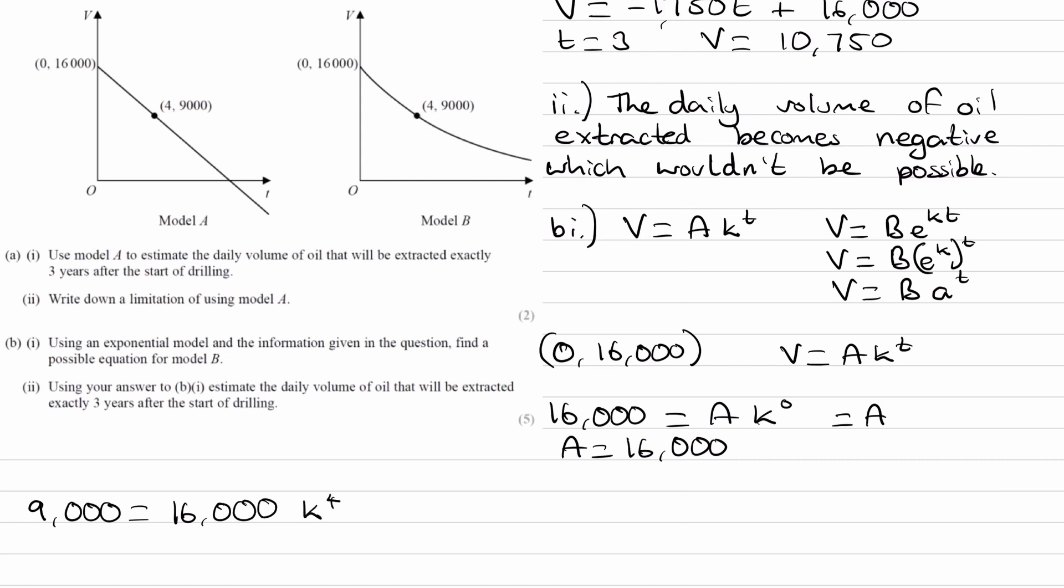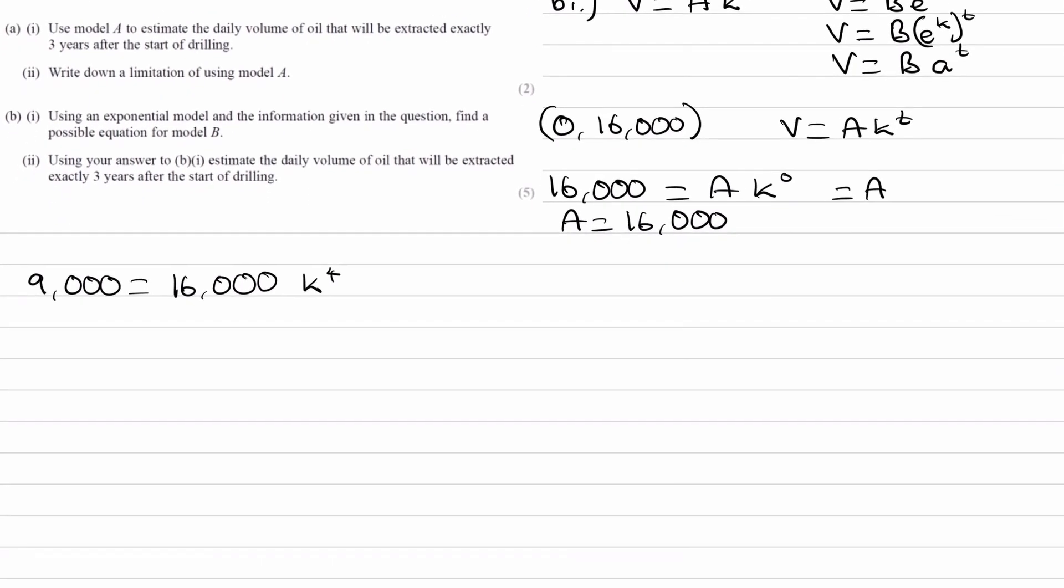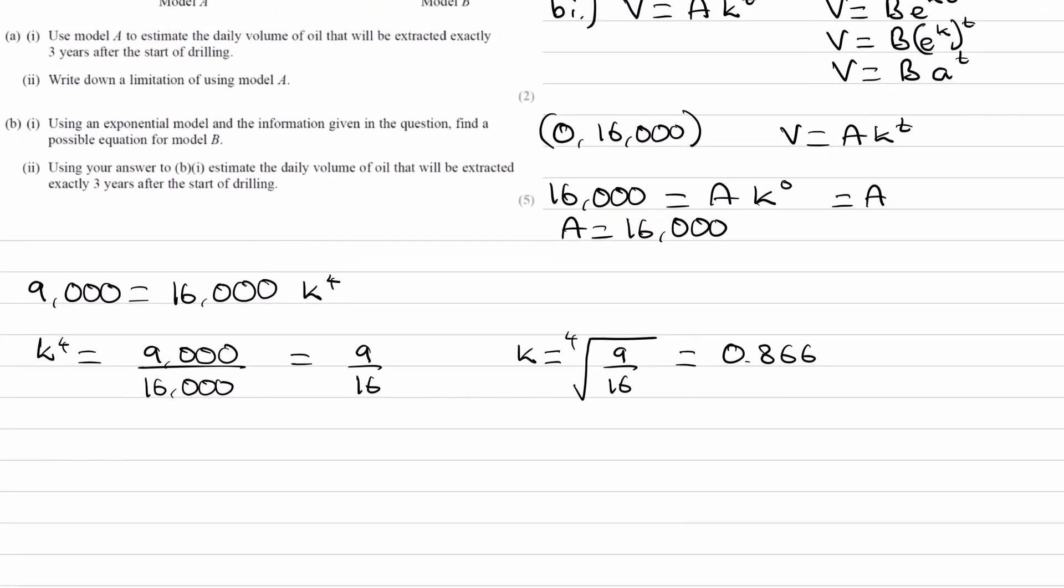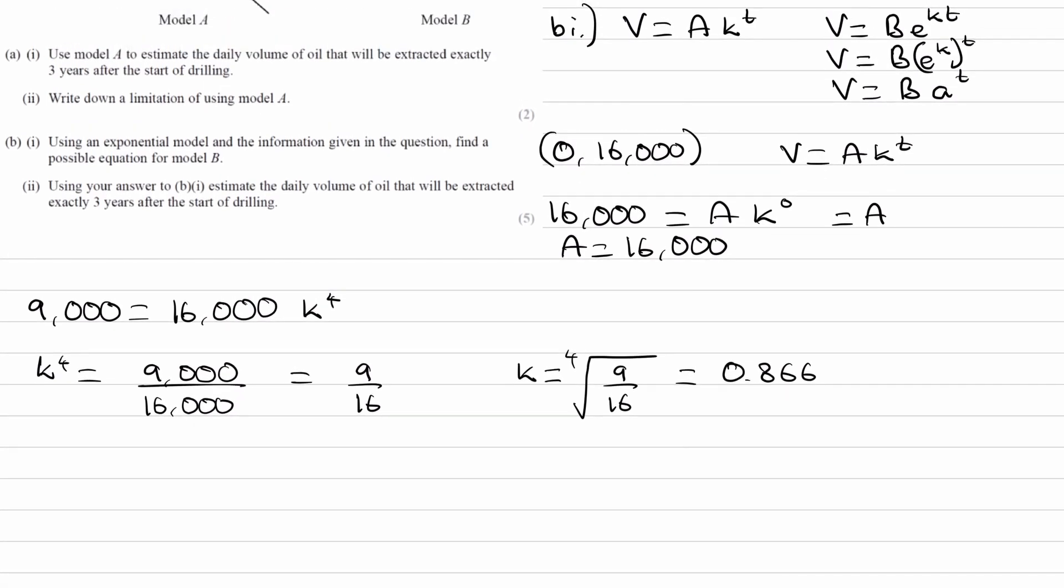We can divide both sides by 16,000, so k to the power of 4 is 9,000 over 16,000, or 9 over 16. Then we can do the fourth root of that, and we end up with 0.866.